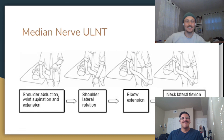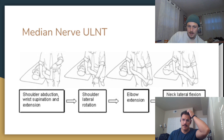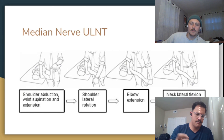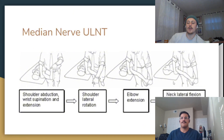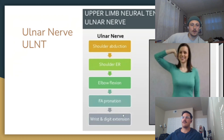For the median nerve, make sure the shoulder is not drifting into elevation — keep it depressed on the table. Bring the arm out, supinate and extend the wrist, bring into external rotation. If you're getting symptoms with just that setup, back off and then test for centralization. For the ulnar nerve: add back the shoulder, rotate out, flex, pronate, and extend the wrist. These are the setup positions for all three nerves.